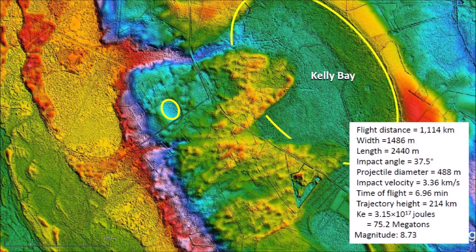Kelly Bay is located 1,114 kilometers from Saginaw Bay, which is assumed to be the point from which the ice pieces that made the bays were launched. The bay has a width of 1,486 meters and a length of 2,440 meters. The width-to-length ratio corresponds to an impact angle of 37.5 degrees. Using realistic equations, we calculate that the impact velocity was 3.36 kilometers per second. The time of flight was 6.96 minutes and the trajectory height was 214 kilometers above the surface of the earth.